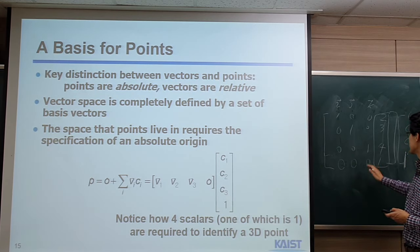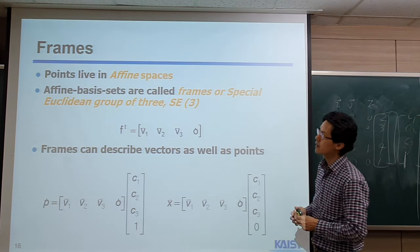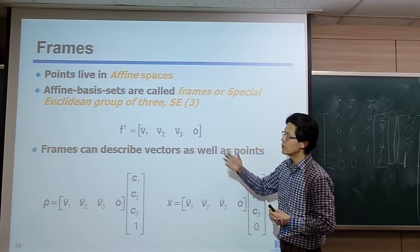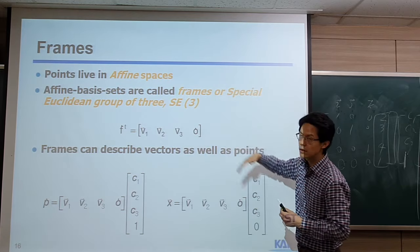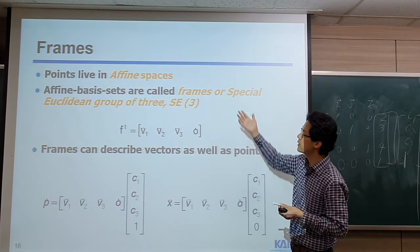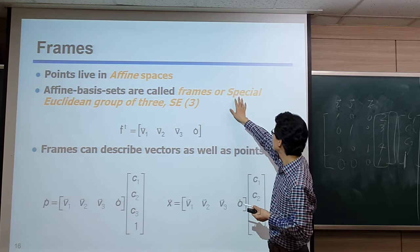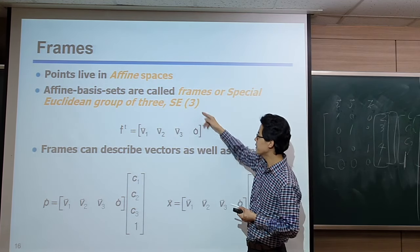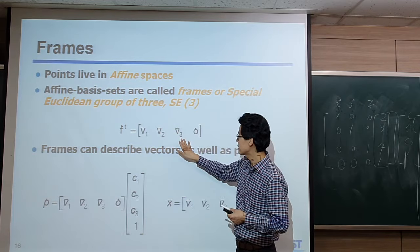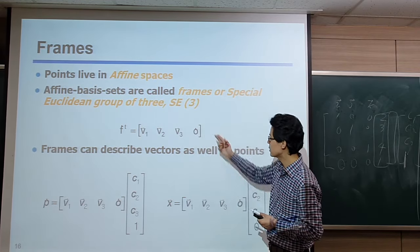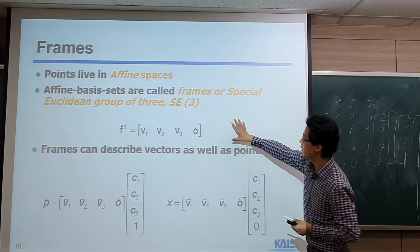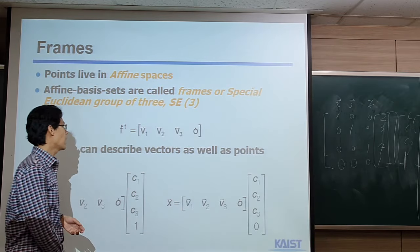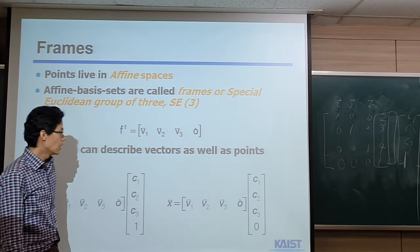Now I will step back to why the basis vectors have 0, 0 at the bottom. We said that points live in affine space. This is also called the affine basis set, or frame. I said that the point is defined in the frame. This is the mathematical formulation of a frame, or the special Euclidean group SE(3). In 3D, we have three basis vectors with one origin — it's actually a 4×4 matrix representing the affine space. Based on this frame, we can define both vectors and points together.